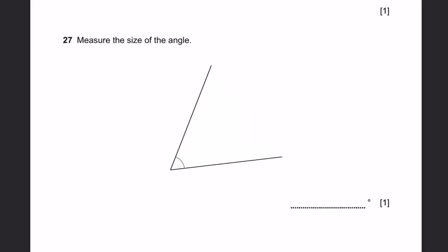Question 27. Measure the size of the angle. We put a protractor with the baseline over here and measure the angle. It will be 62 degrees. And that is what we get as our answer. 62 degrees.